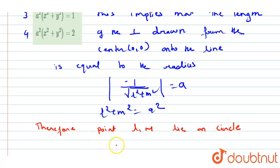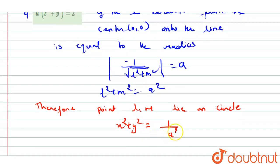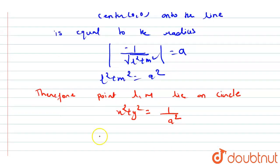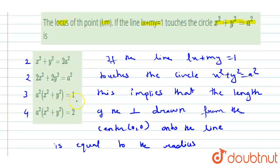So we can say that x² + y² = 1/a² or we will get a²(x² + y²) = 1. Now we see that our answer is matched with option number third. Thank you.